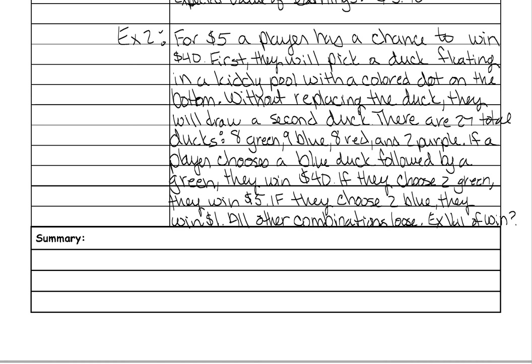What is the expected value of winning? The first thing we need to figure out are each of the situations and how much money you'll actually get. Our three situations are: blue to green wins $40, green then green wins $5, blue then blue wins $1, and then you just lose. Those are our four situations and we need to figure out the money from that.